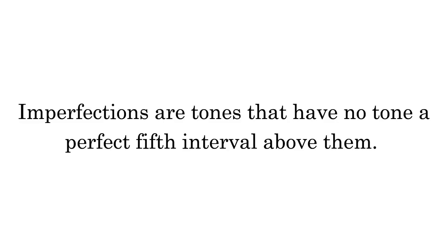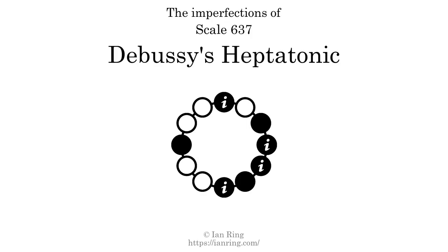Imperfections are tones that have no tone a perfect fifth interval above them. This scale has 4 imperfections, at 4 positions shown in the diagram.